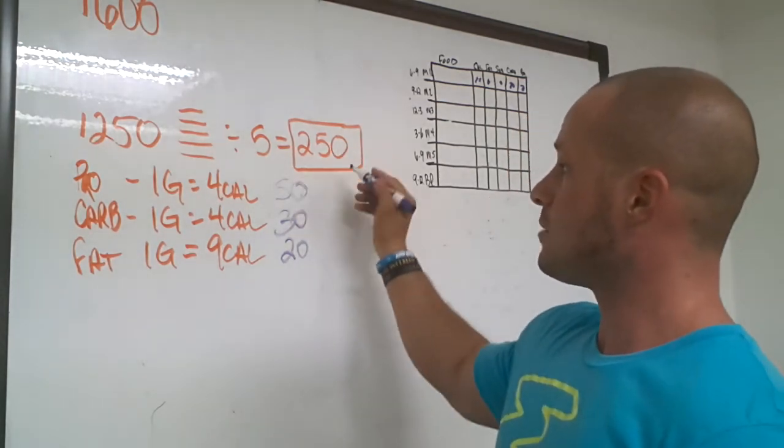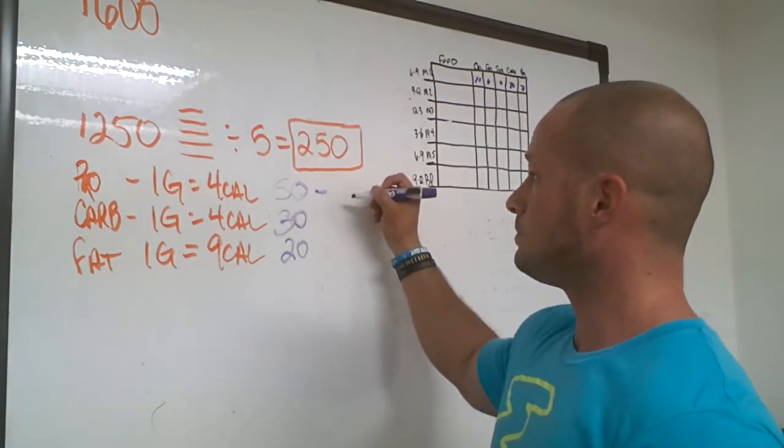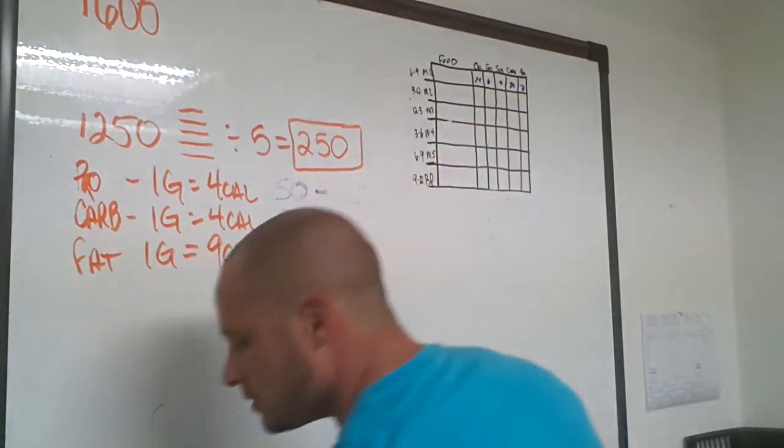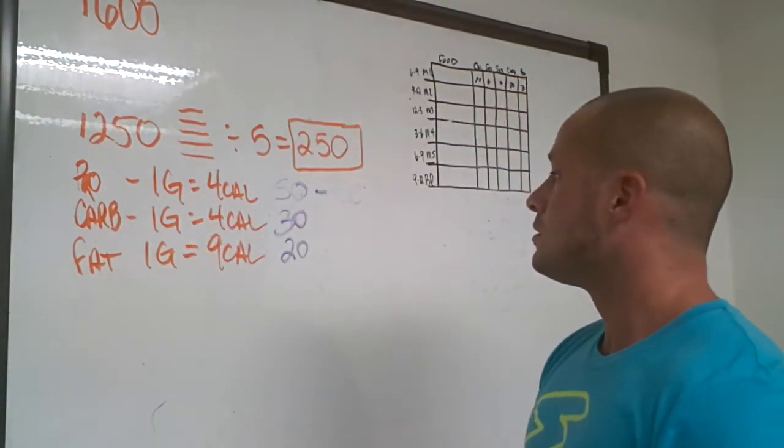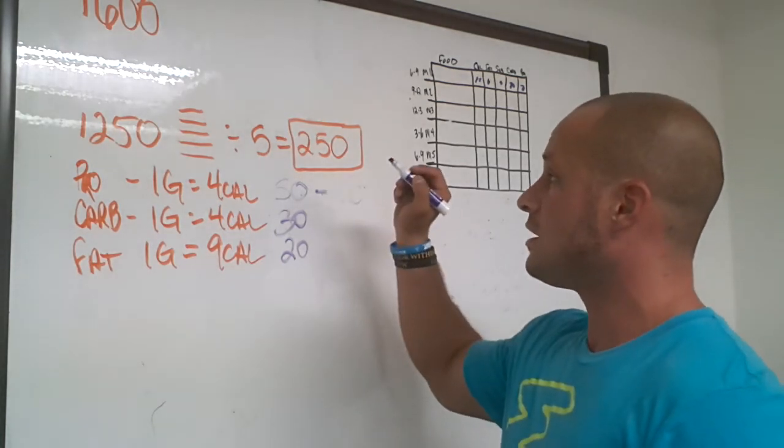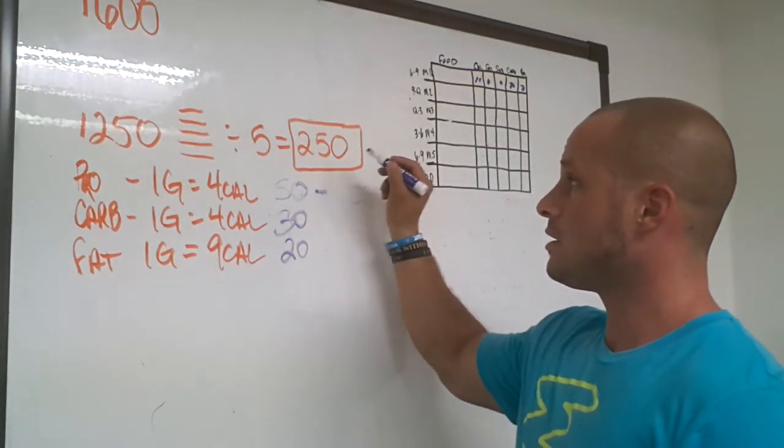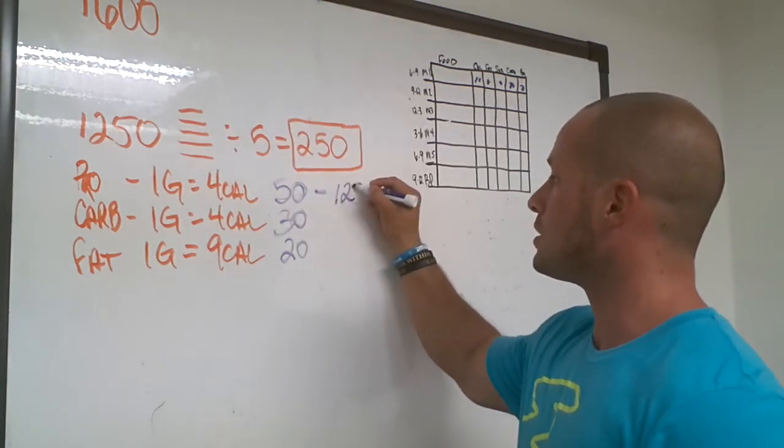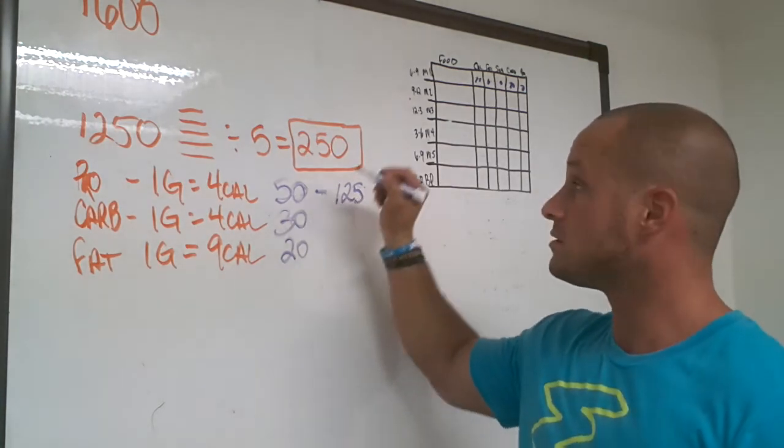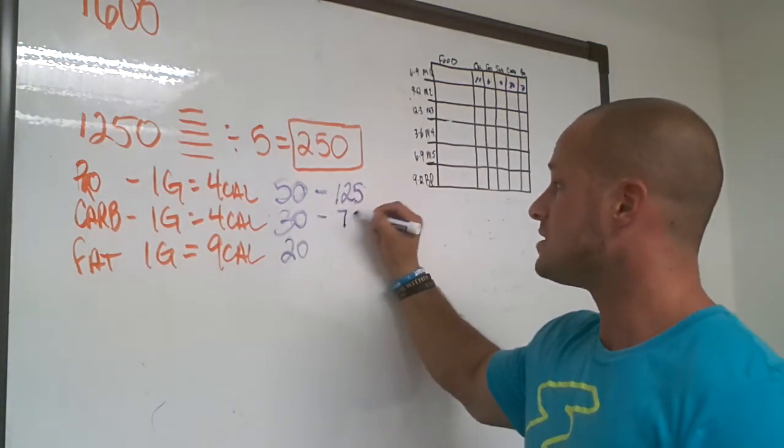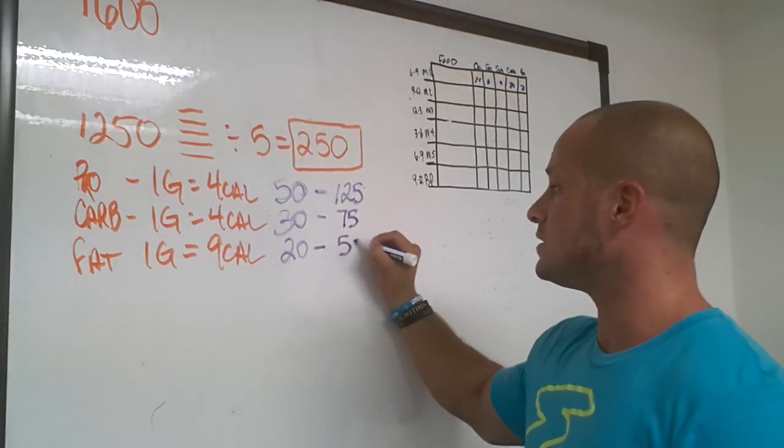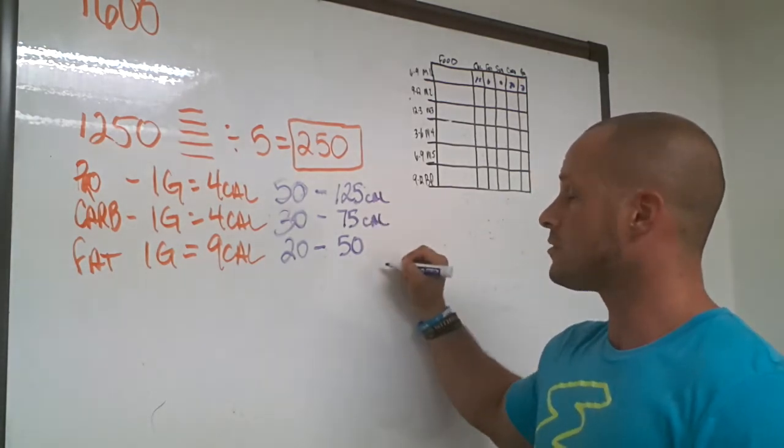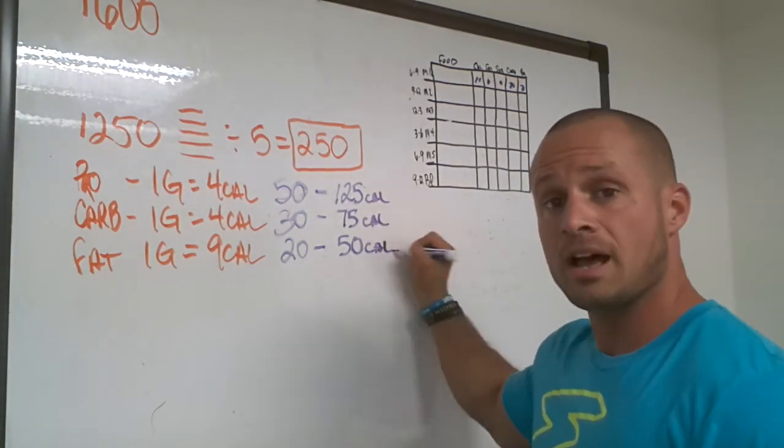If we get half of the 250 from protein, you're going to be at about 125. If we get 30% of that number, that's going to be 75, and 20% is 50. So 125 calories are coming from protein, 75 calories are coming from carbs, and 50 calories are coming from fat.